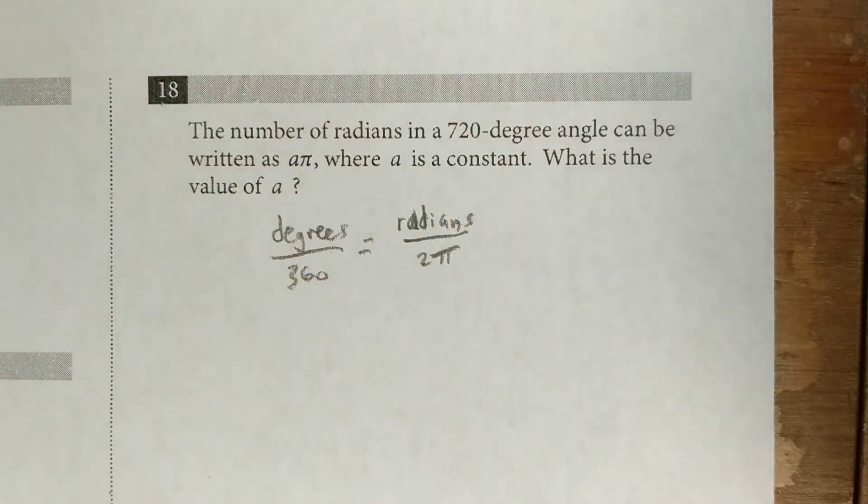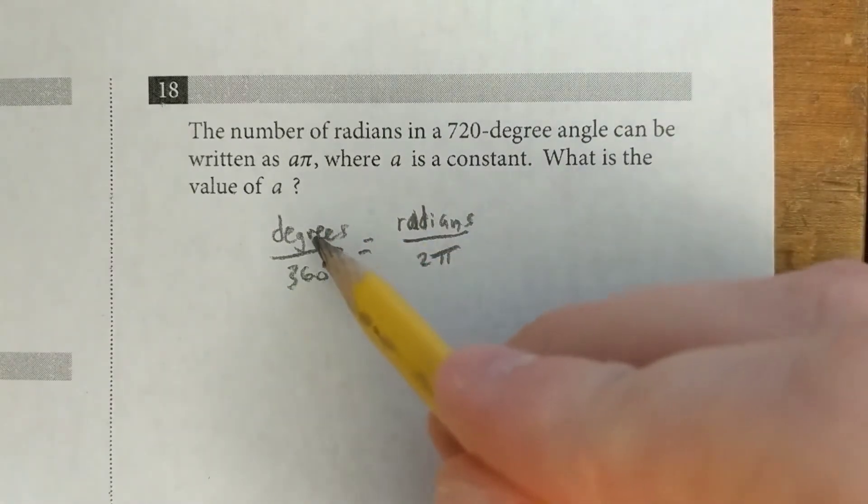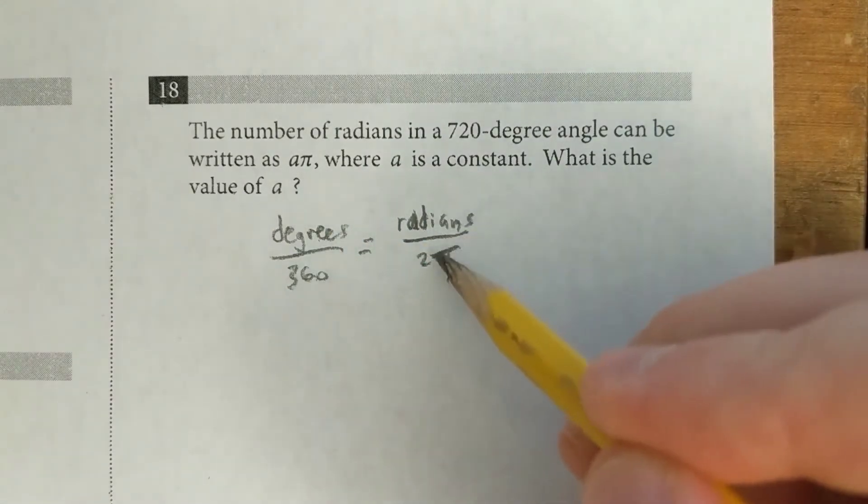Sometimes they'll ask you to convert radians to degrees or degrees to radians. You can always just use this proportion. Degrees are out of 360, radians are out of 2 pi.